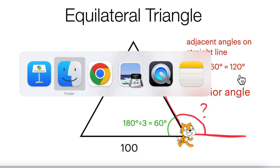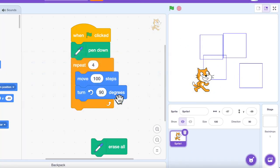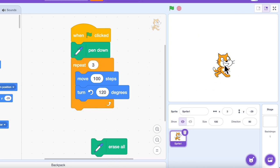Now we can go back to Scratch and then we can change our turn angle in this way from 90 to 120 degrees. And we have to repeat this for three times only because we are going to draw a triangle. So we can run the program again. Now the cat can successfully draw an equilateral triangle.